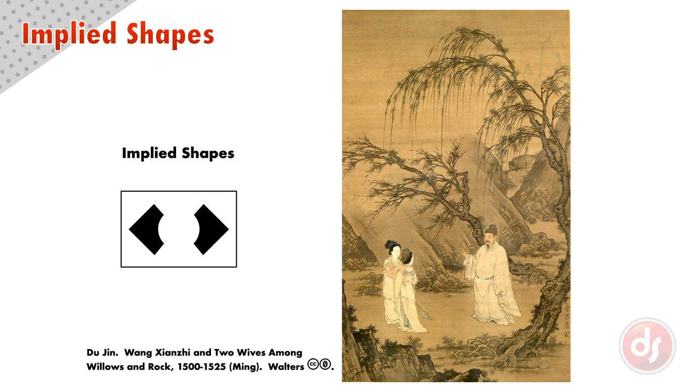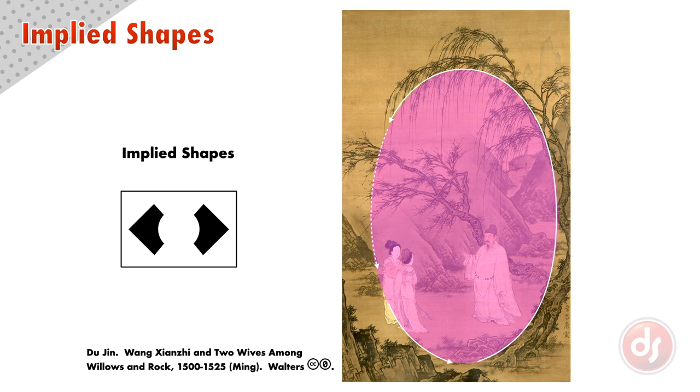In this work by Dujin, the long curving line of the tree and its drooping branches connects to the two wives below, which is then picked up by the curve of the rocks leading back to the tree. This creates a very clear and implied oval shape that contains the figures and groups them together.